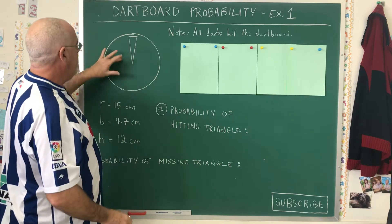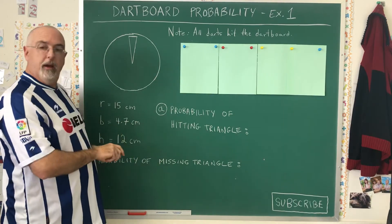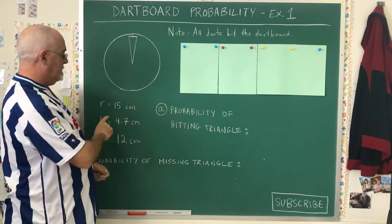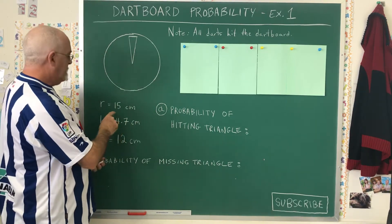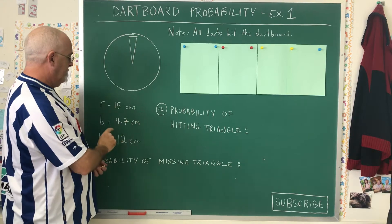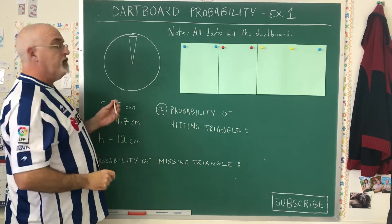But we take that as it is, and what we need to do is take the information we're given to calculate the area of the triangle and the circle. In this case we're given the radius of the circle and the base and height of the triangle.